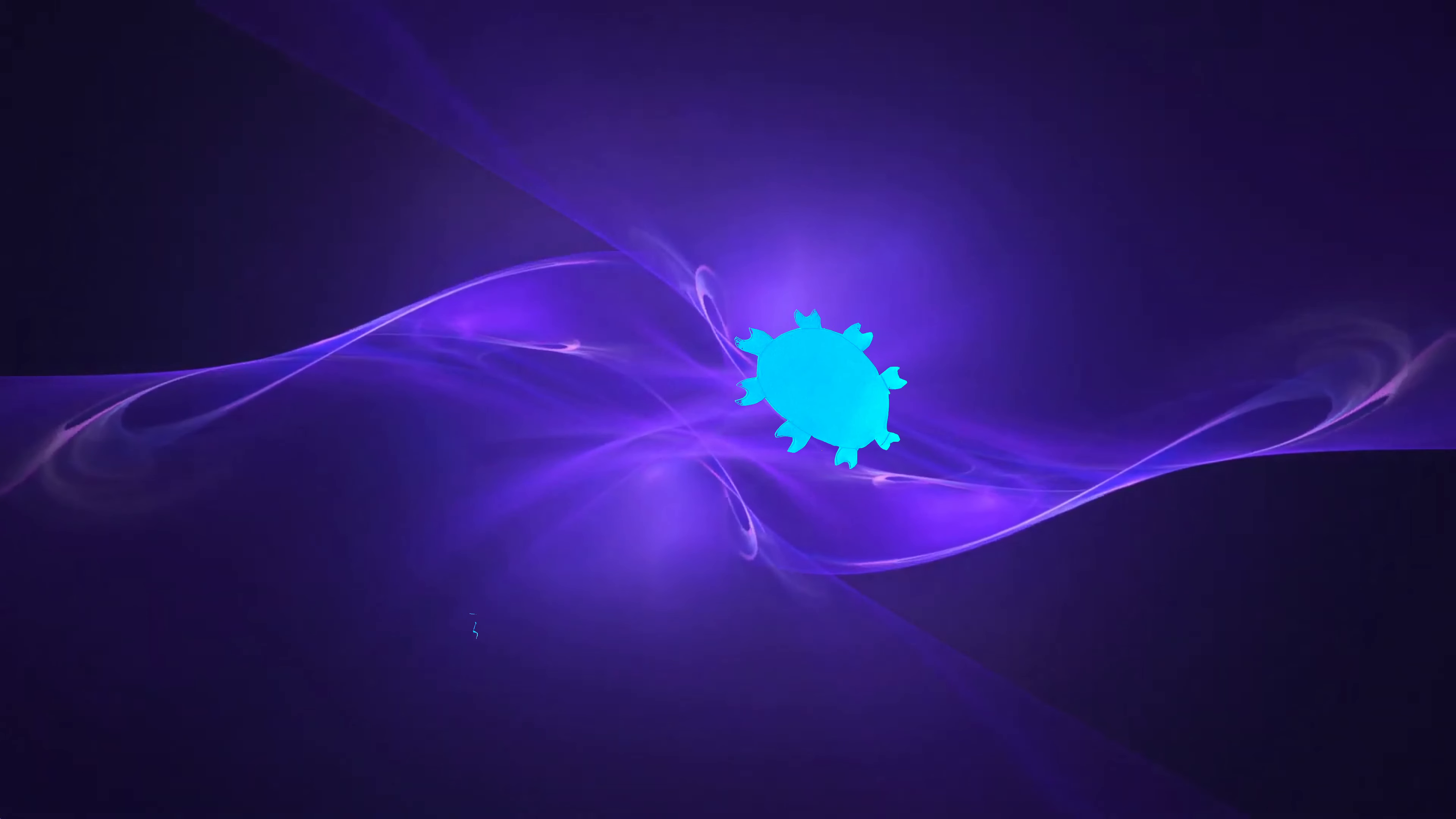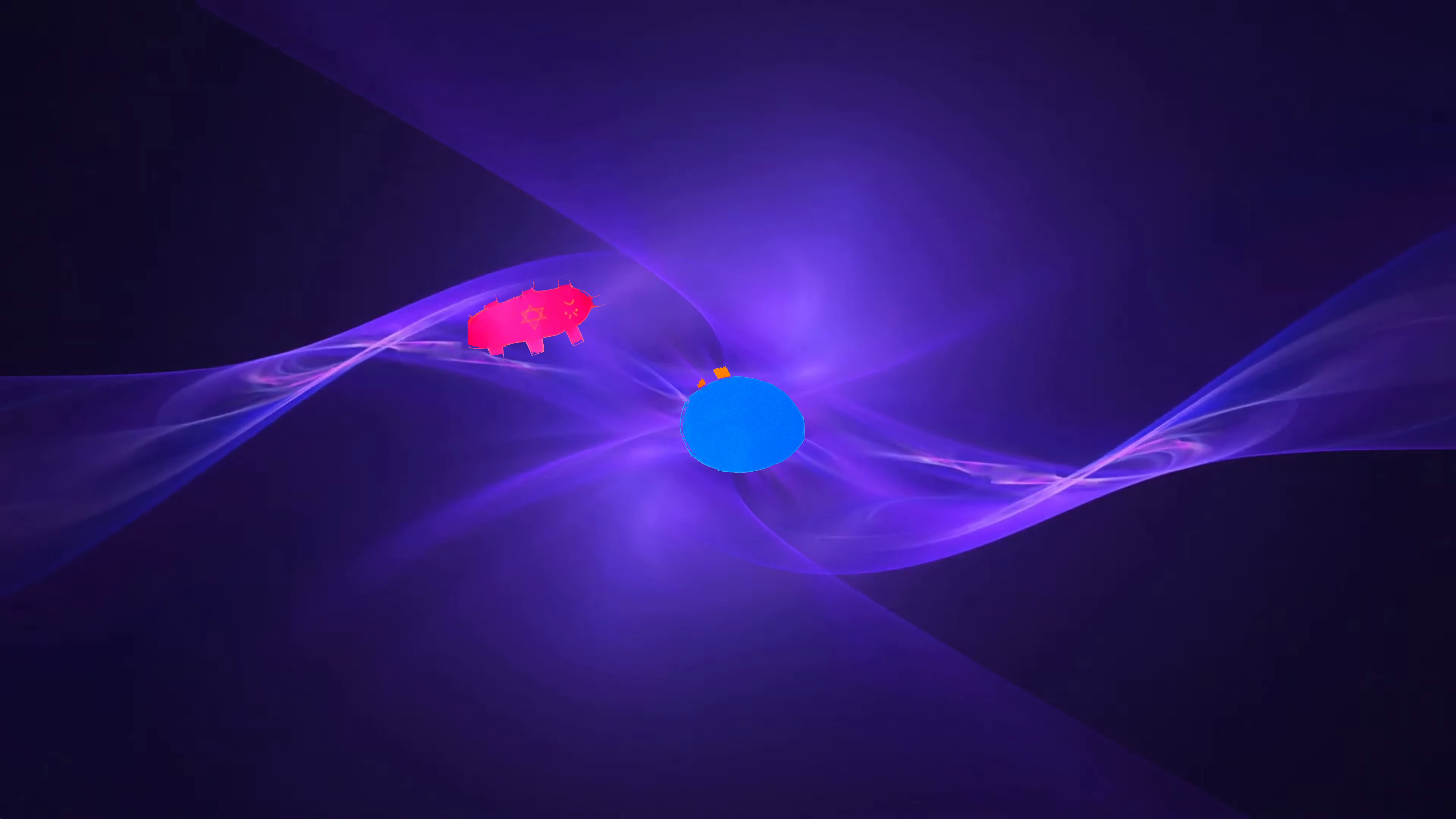Once activated, these T helper cells stimulate B effector cells to differentiate into plasma cell clones. B cells bind to specific antigens and also transform into APCs, which attract even more activated T helper cells.